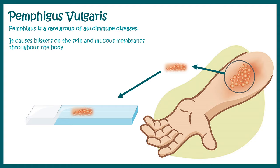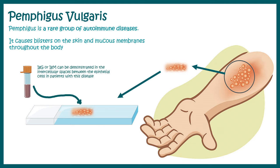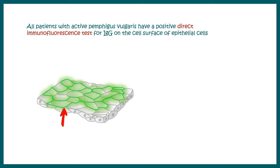Let us take some examples of direct and indirect immunofluorescence in clinical settings. Pemphigus vulgaris is an autoimmune disease where blistering of the skin or mucosal membrane takes place. This disease can be diagnosed with direct immunofluorescence — a perilesional tissue is placed on a slide and it can be demonstrated that the tissue is positive for IgG or IgM, with these antibodies deposited in the intercellular spaces, producing a honeycomb maze-like pattern.